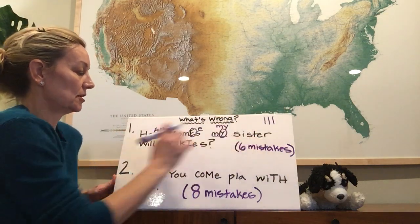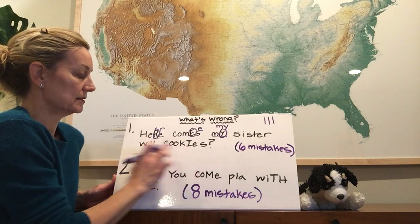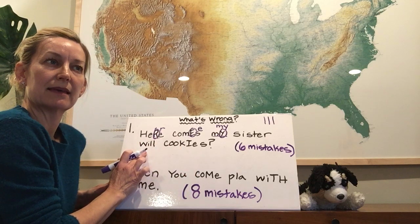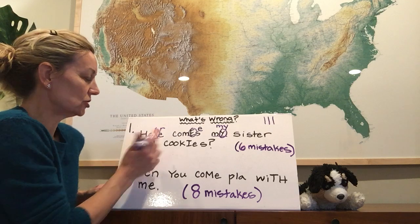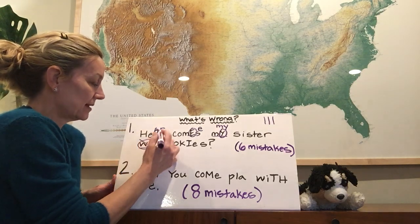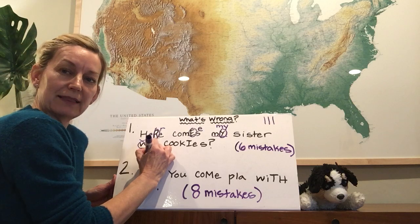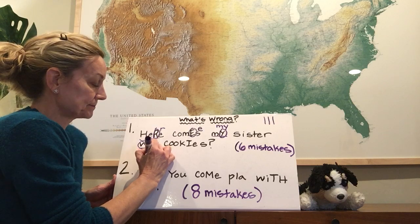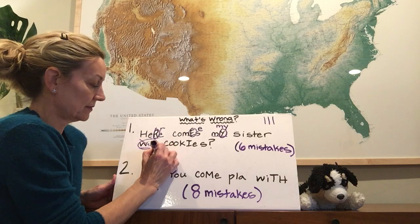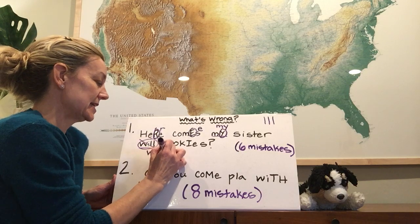Here comes my sister. Wait a minute — with cookies. Is that how you spell 'with'? With. I think that's a T-H. That says 'will.' I'm going to call that a mistake right here. How do you spell 'with'? Help me out please. W — what's next? I. That's right. T-H.